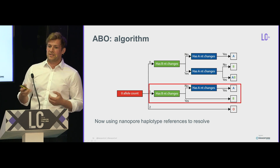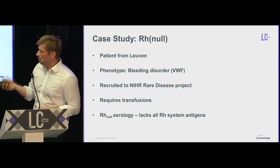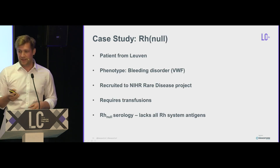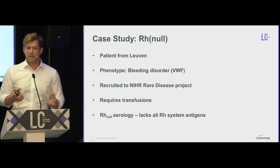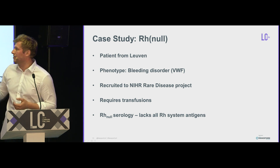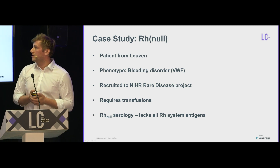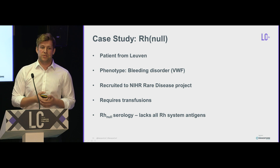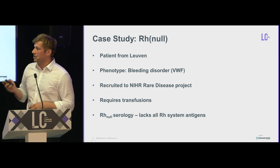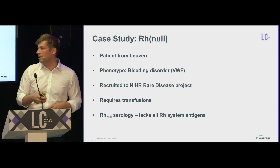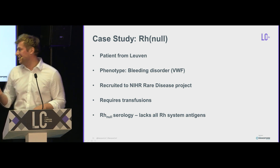This is my first example of Nanopore use in the project. I think Nanopore is a fantastic tool for getting haplotypes for blood group genes, and I wanted to highlight this with a case study — an RH null case study. We have a patient from Leuven. She has a bleeding disorder related to von Willebrand's factor, was recruited to the NIHR Rare Disease Project — a project that sequenced many rare disease individuals using Illumina — and she requires regular transfusions. She has RH null serology.